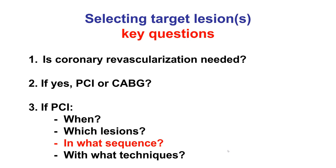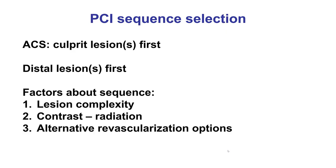What is the sequence for multivessel PCI when more than one lesion needs to be treated? As discussed, the culprit lesions for ACS should be done first. For multiple lesions in the same coronary artery, typically the distal lesion should be done first, because placing a stent proximally and then recrossing it can result in deformation of the proximal stent and the need for repeat intervention.